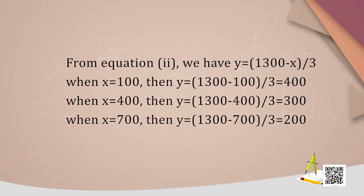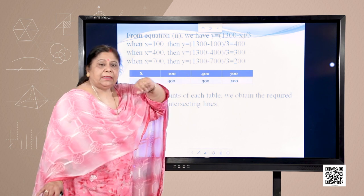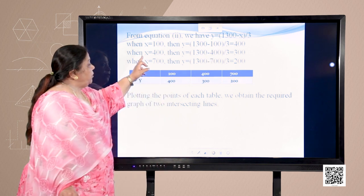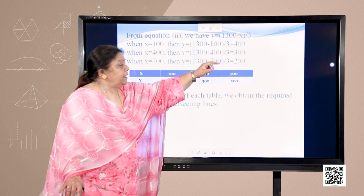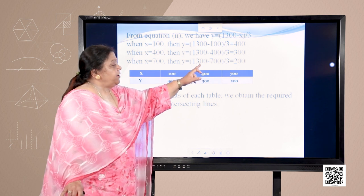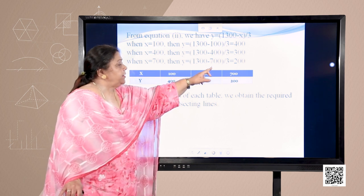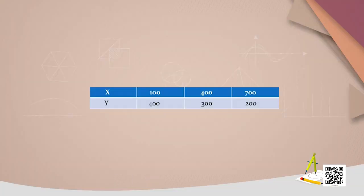From equation 2, Y = (1300 − X) / 3. When X = 100, Y = 400; when X = 400, Y = 300; when X = 700, Y = 200. These points form the tabular column for the second equation and will be plotted on the graph.